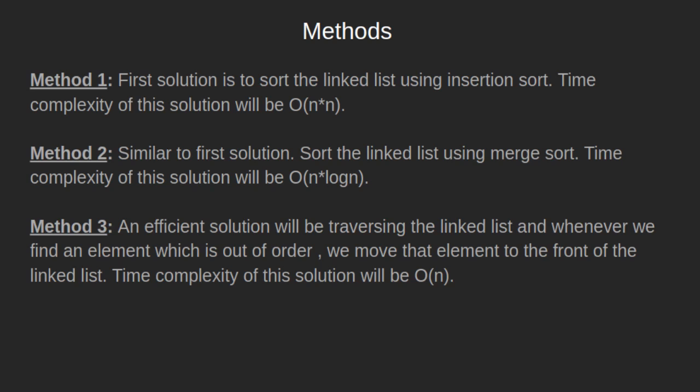Let's see method 3, which is the most efficient solution to the given problem. What we do is traverse the linked list, and whenever we find an element which is out of order, we move that element to the front of the linked list. Time complexity of this solution will be O(n).